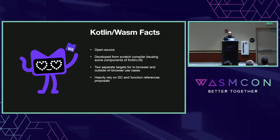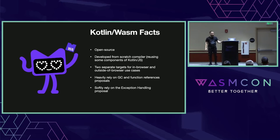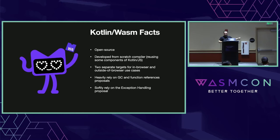We heavily rely on GC and function references proposals. It means that if you try to run the binary generated by our compiler in a VM that doesn't support one of these proposals, it will not work. We also softly rely on the exception handling proposal — by default we turn on exception handling, but you have the ability to turn it off. If some VM doesn't work with it, you can just turn it off and it will work.